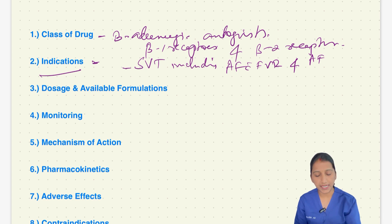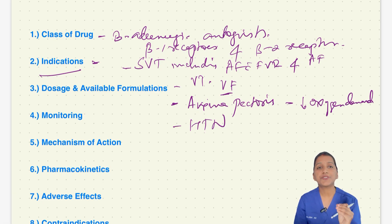Next is ventricular tachycardias wherein it can be considered for use for ventricular tachycardias and ventricular fibrillation. The next indication is angina pectoris wherein it reduces the oxygen demand by decreasing the heart rate. The next indication is hypertension wherein it is used in combination with other drugs or if hypertension is associated with heart failure.